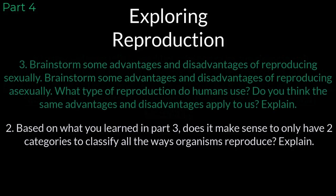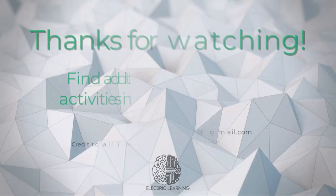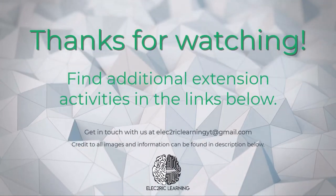Question number three: brainstorm some advantages and disadvantages of reproducing sexually. Brainstorm some advantages and disadvantages of reproducing asexually. What type of reproduction do humans use? Do you think the same advantages and disadvantages apply to us? Explain. Question four: the female bees in this activity inherited half of their DNA from their mother and half from their father. How do you think it's possible for an organism to pass down half of its DNA? Thanks for taking the time to explore concepts in biology with us. We'll see you next time.